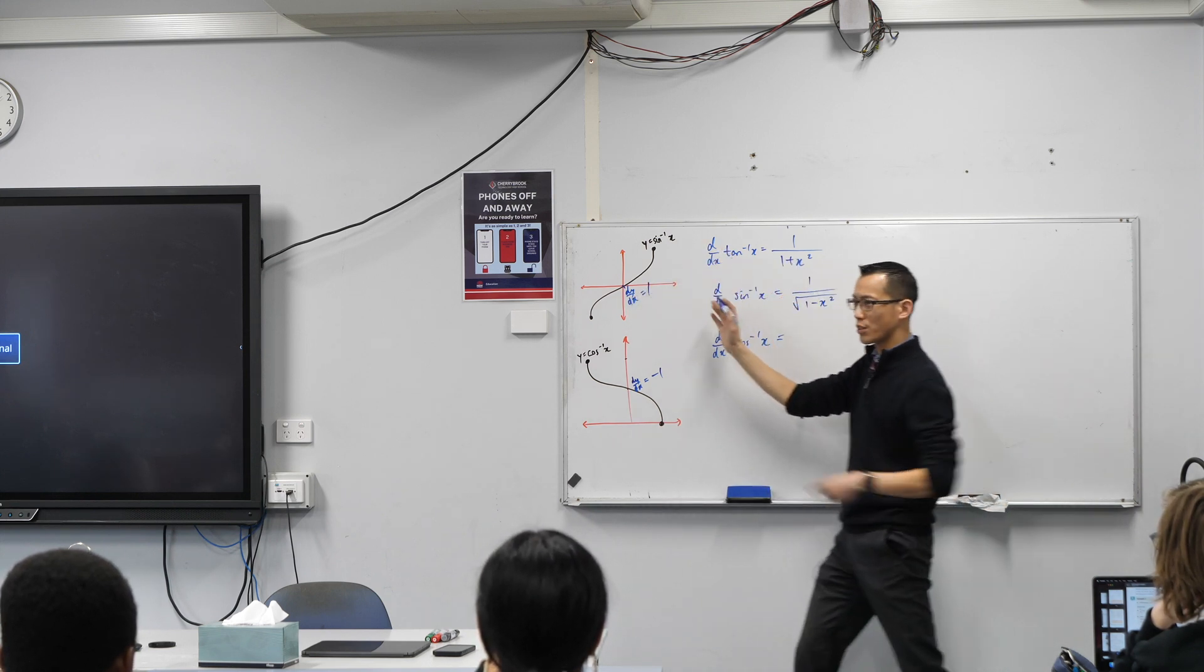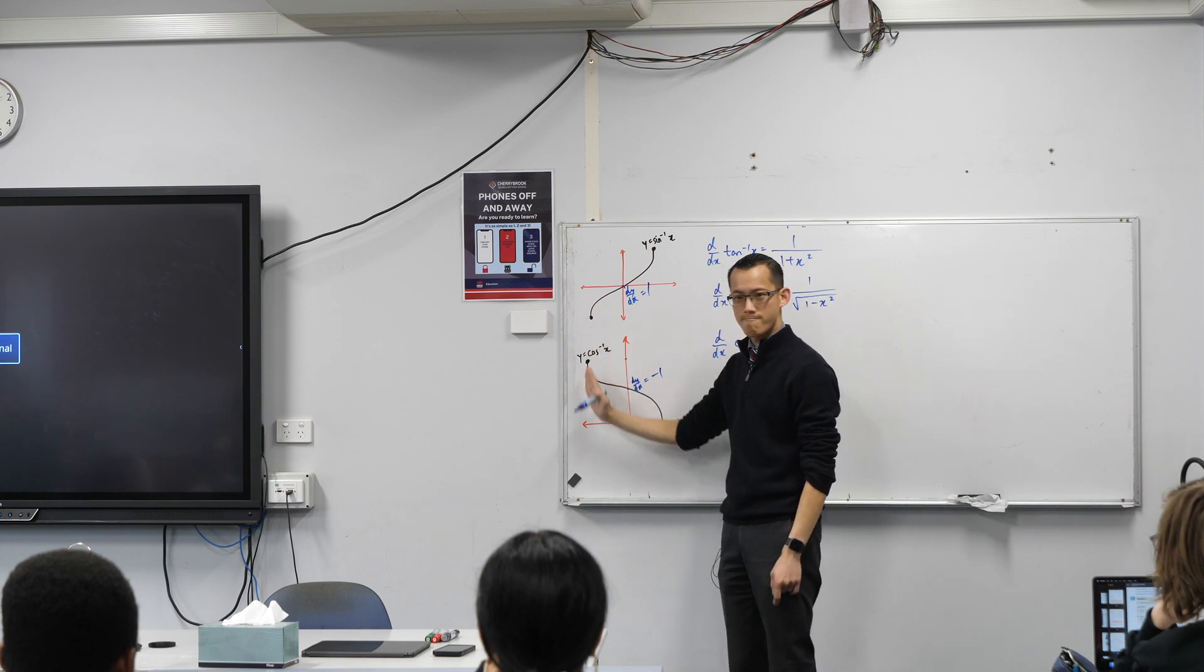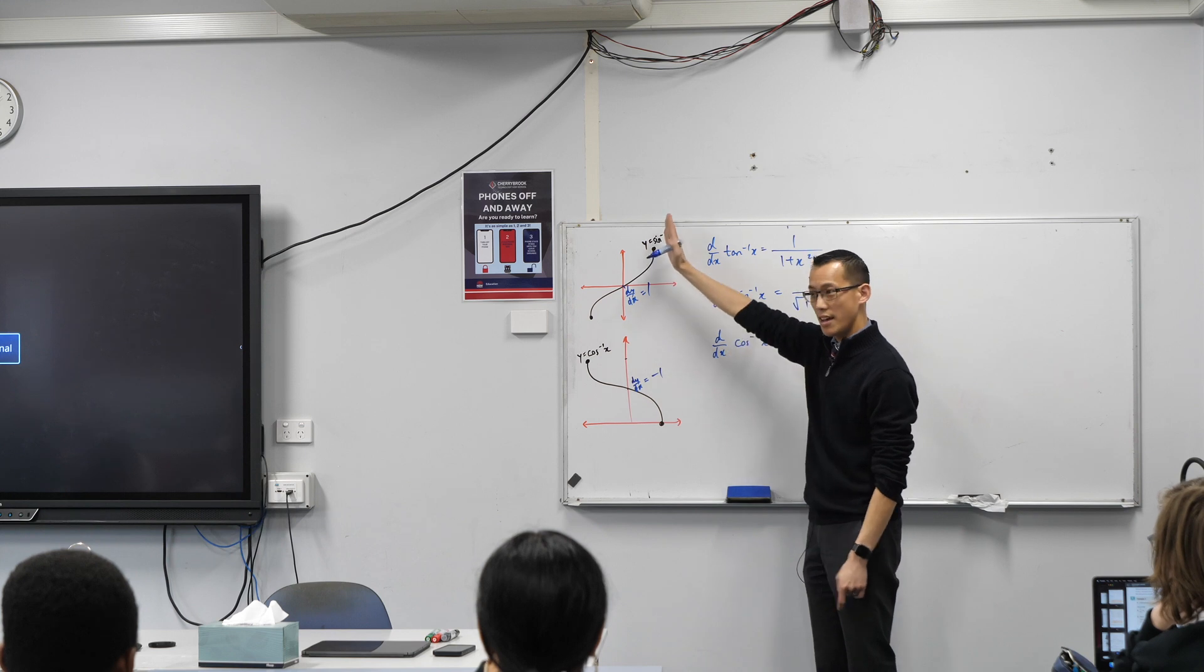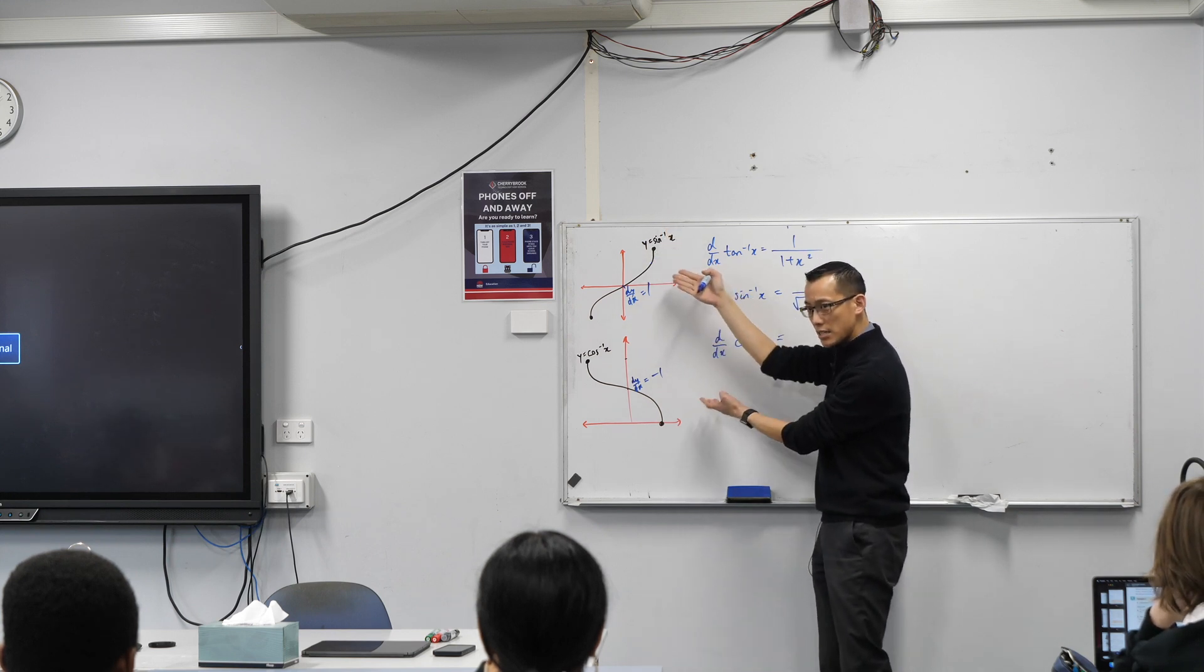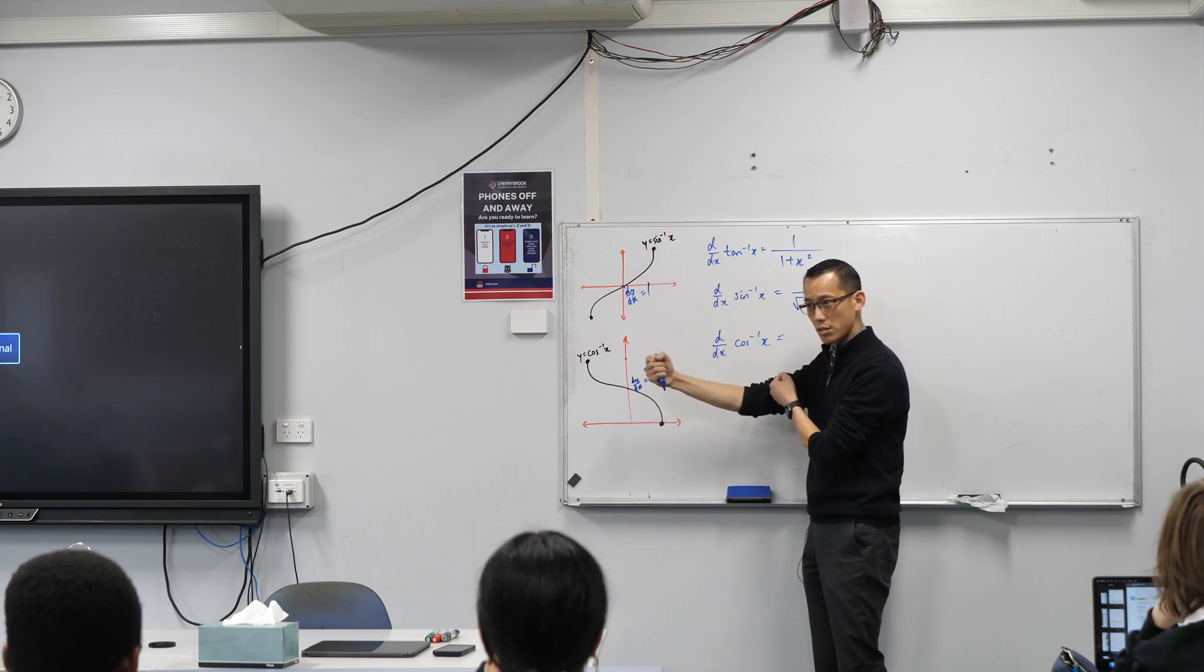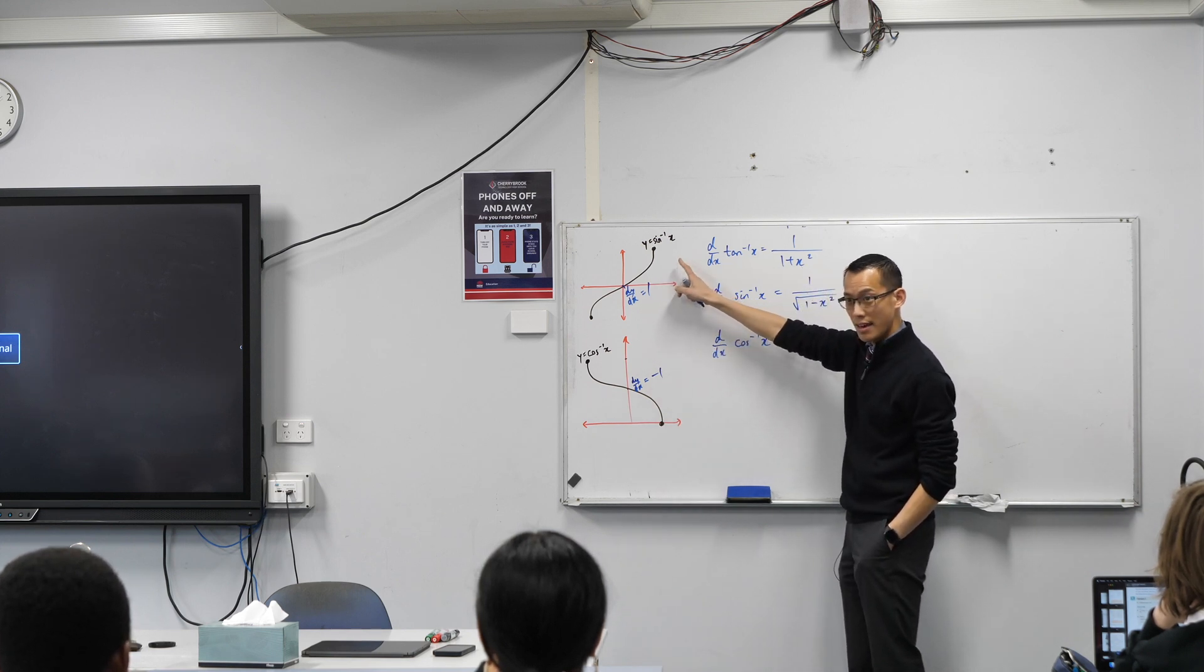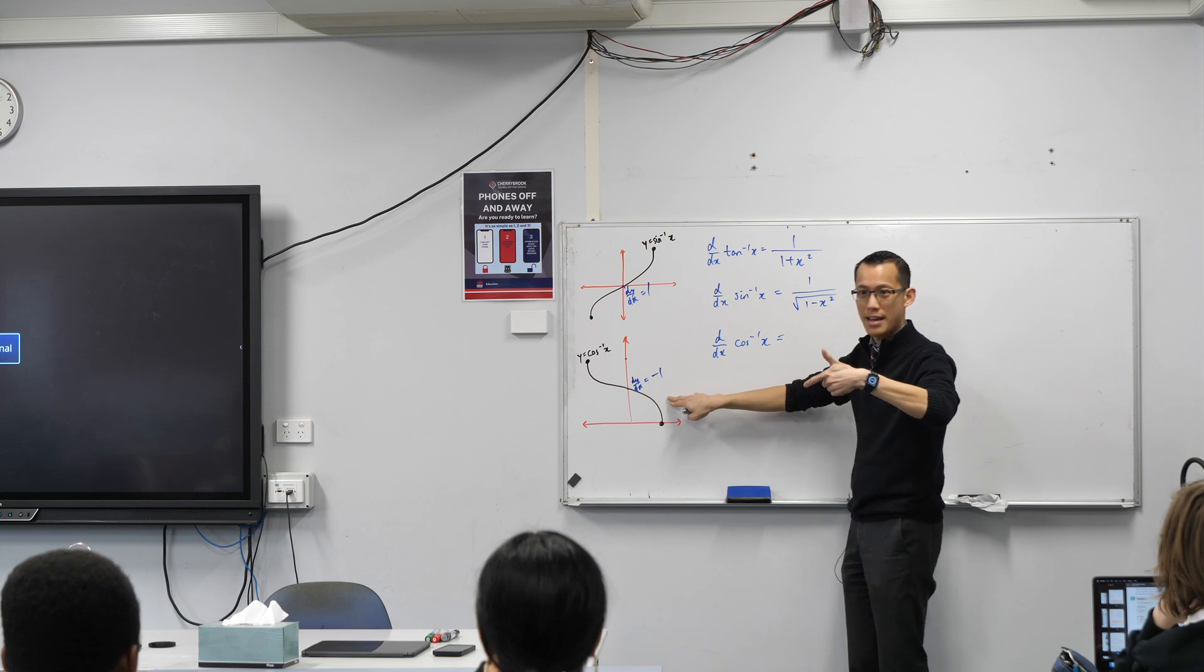And then when you look at the rest of this, right, you're like, oh, you've got this vertical tangent here and here, vertical tangent here and here. These are kind of the same thing, but mirror images. Do you agree? Like really, the gradient of this is the same as this, but upside down, right?